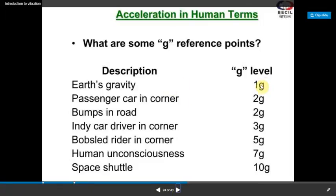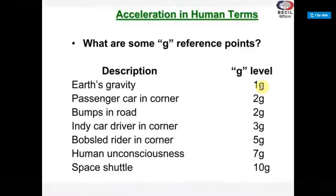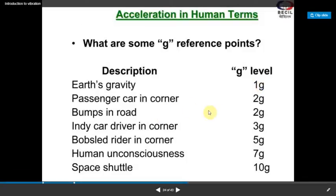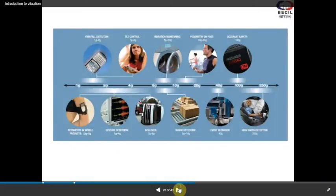So G value it is nothing but the mass acceleration due to gravity and its value 9.81 newton. So basically what is the force which we are going to raise when a passenger car in corner it comes around 2G. So in this way you can just get an example that when you are in a space shuttle you will get a 10G force. So that is what I'm going to tell you and that's the end of my slide. So I hope you like it and enjoy that particular slide.